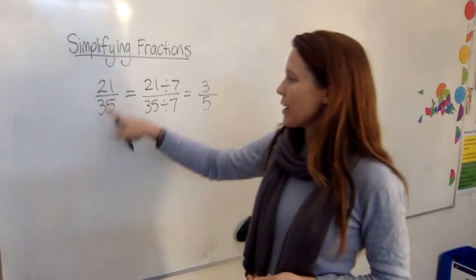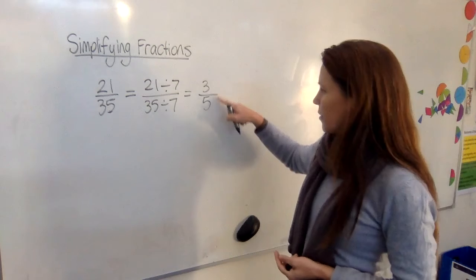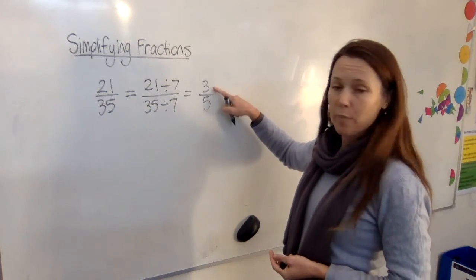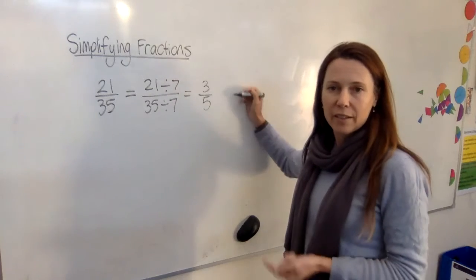3 fifths, therefore, is exactly the same amount as 21 35ths. And we can tell this is as good as it gets because they're prime numbers. As long as one of them is a prime number at least, then you know it can't get any better.